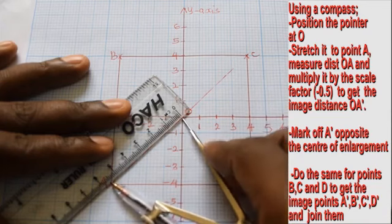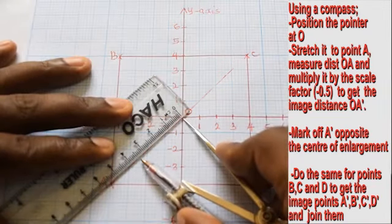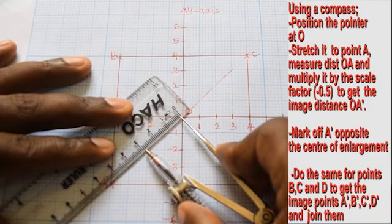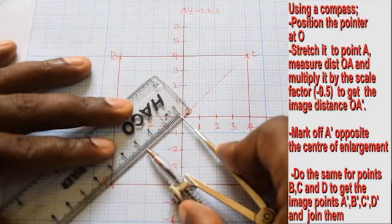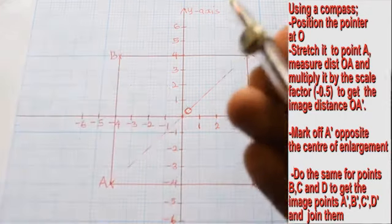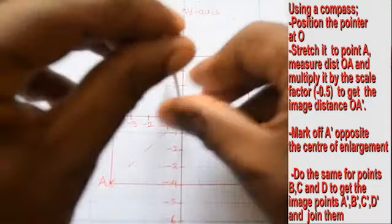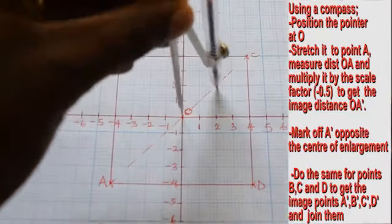Mark off the image distance along the straight line opposite the center of enlargement and name it A prime.